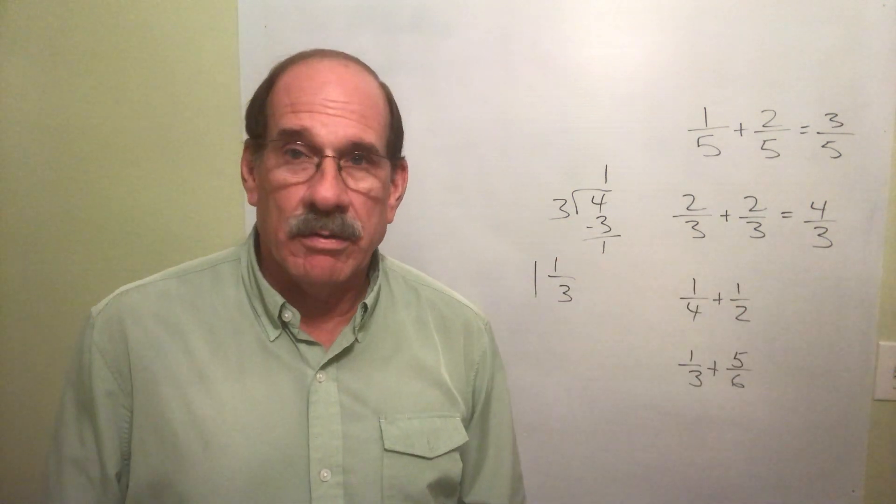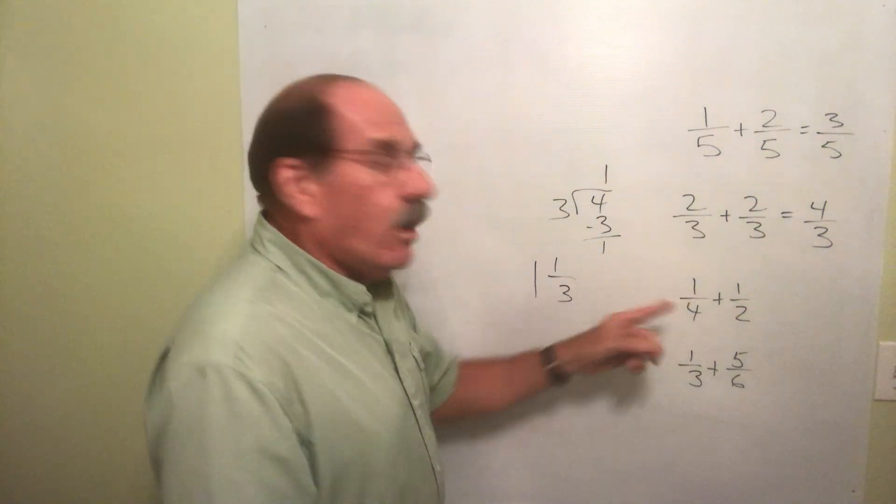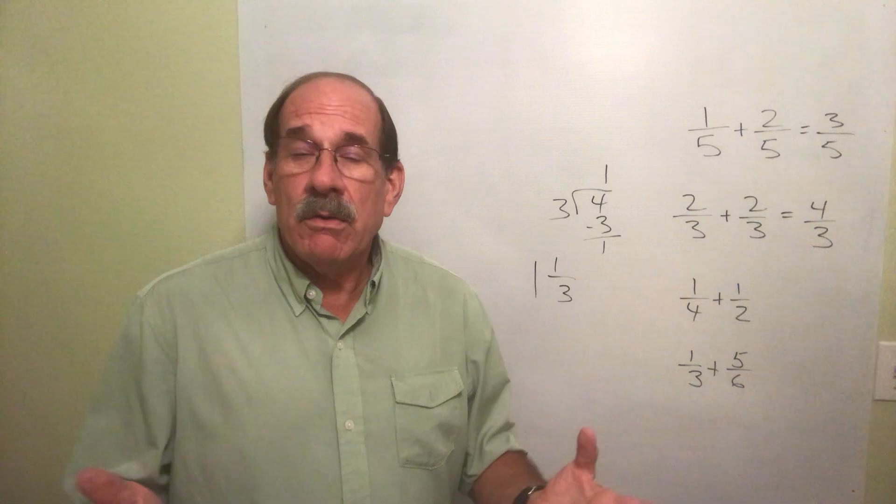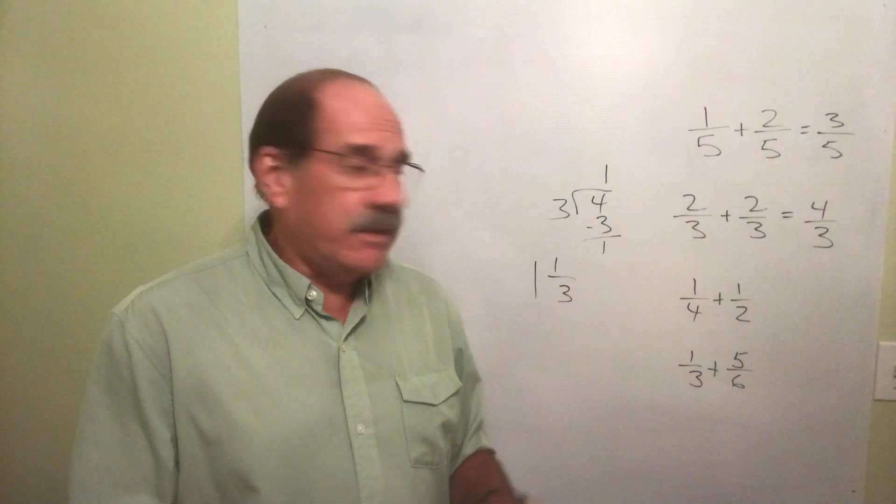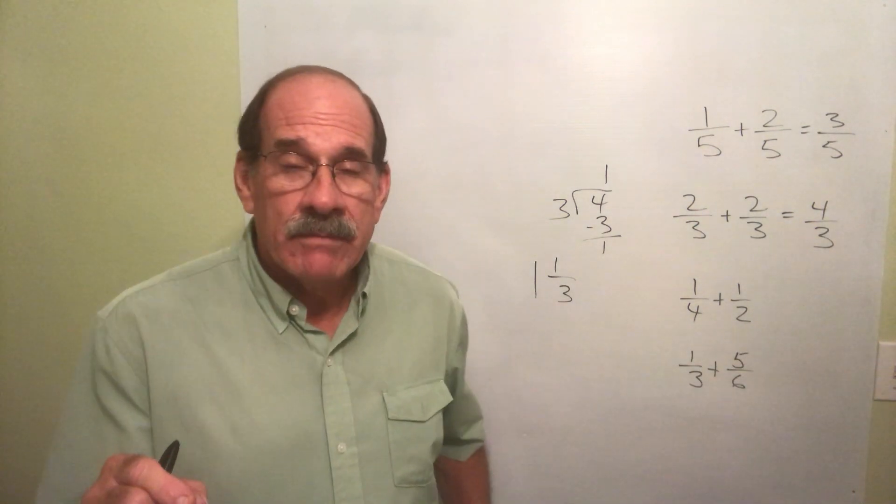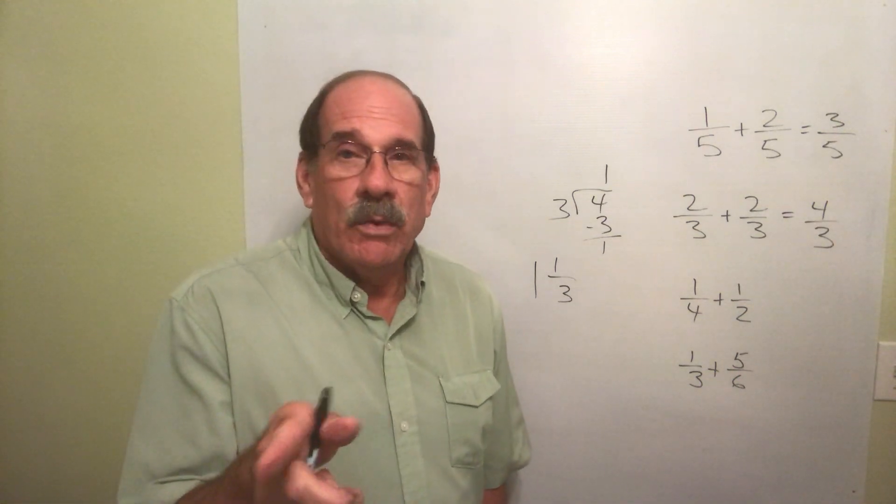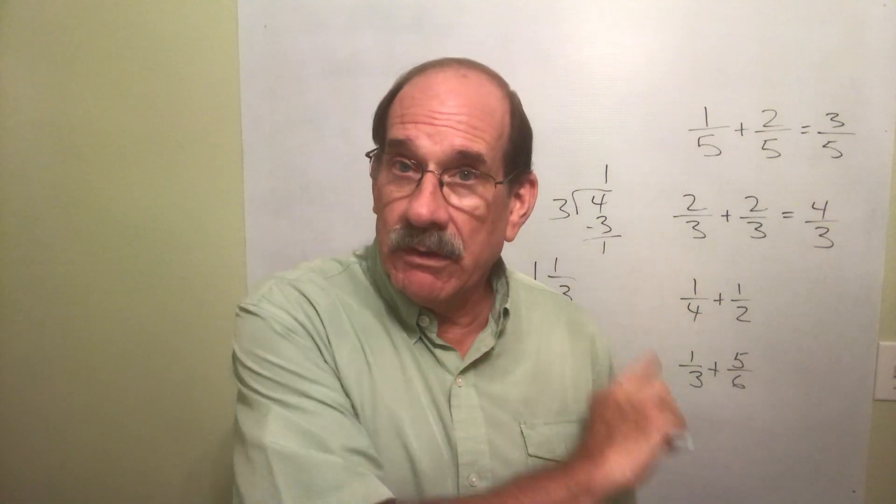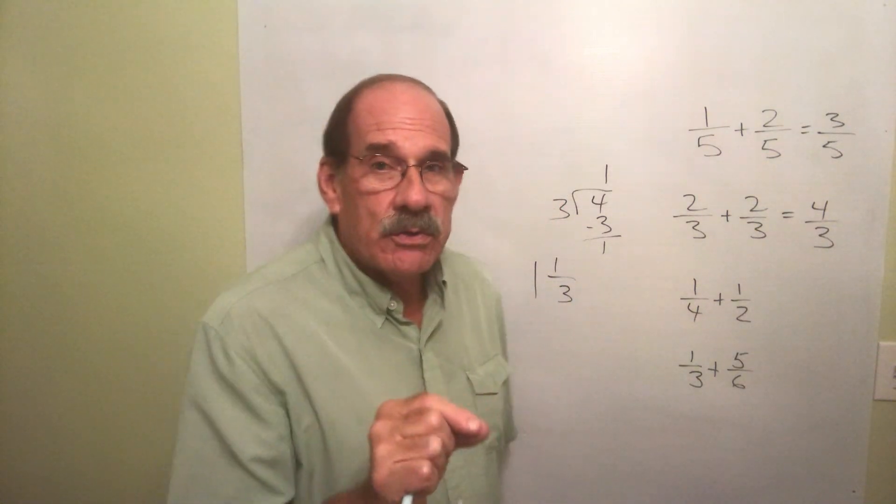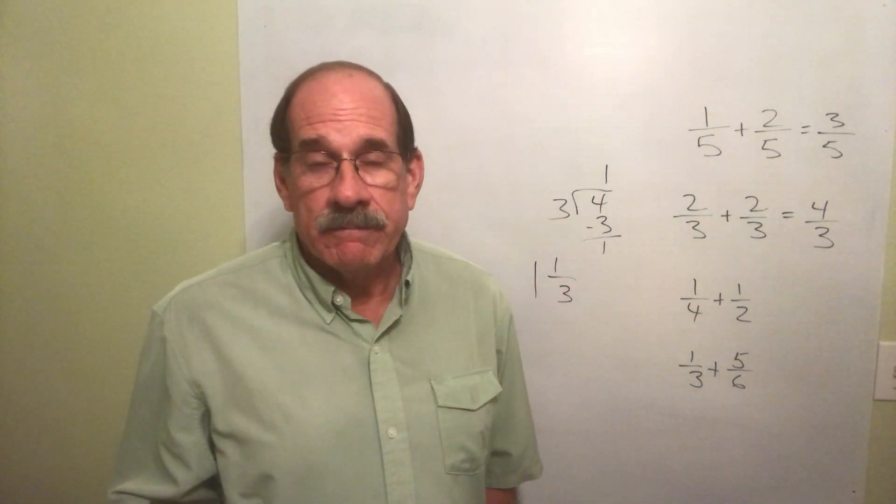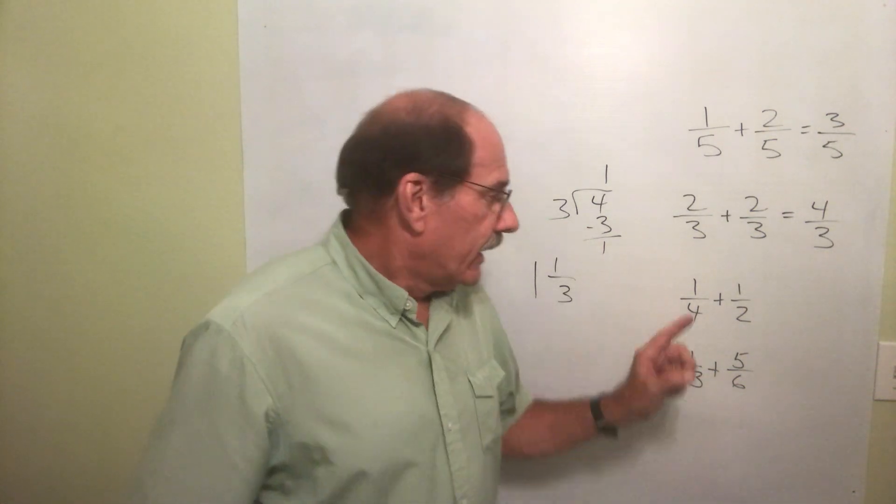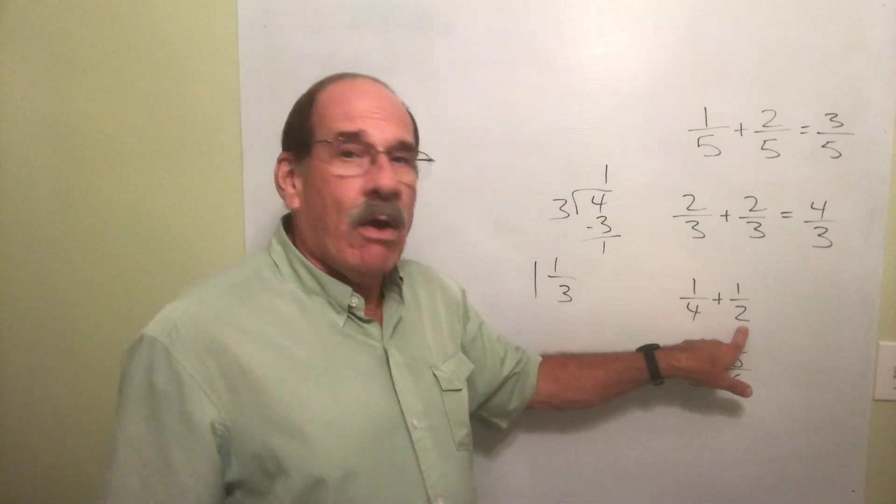Let's say, oh, we got a problem: one-fourth plus one-half. We don't have a common denominator. So if the bottom number is not the same, you must enlarge. Here's why we have to learn to enlarge. Here's the reason for enlarging a number. We have to enlarge one or the other or both, and here's the way you judge that. Ask yourself the following question: can I enlarge the smaller of those two bottom numbers and make it the larger of those two?